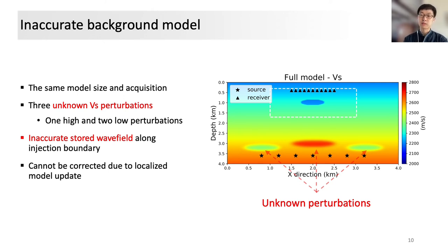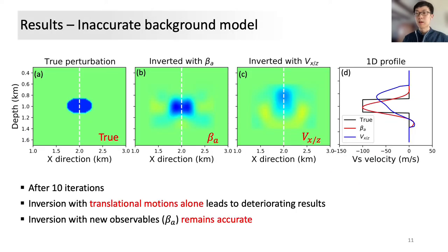Now let's check how our localized inversion behaves during different seismic observations. This figure shows the true and inverted perturbations starting from inaccurate background models. The inverted structural anomaly from the velocity component is slightly shifted upwards and mixed with some artifacts, while that from apparent S-wave velocities remain nearly as accurate as before. 1D profile shown in figure D gives a more clear comparison of the inversion results using translational and combined measurements. Given above facts, we may say that apparent S-wave observables are basically unaffected by some model inaccuracies that are not in the vicinity of our target areas.